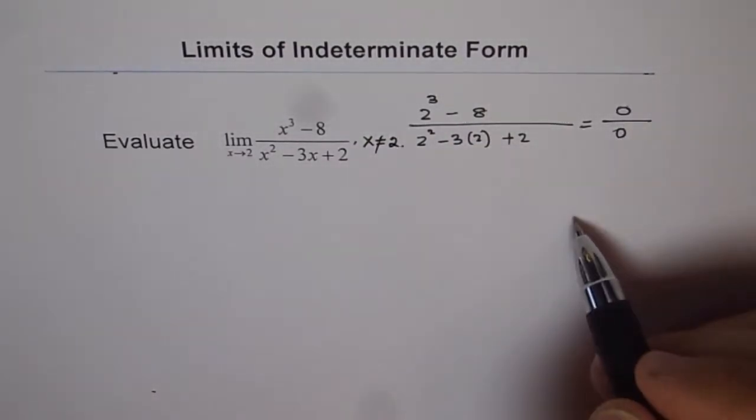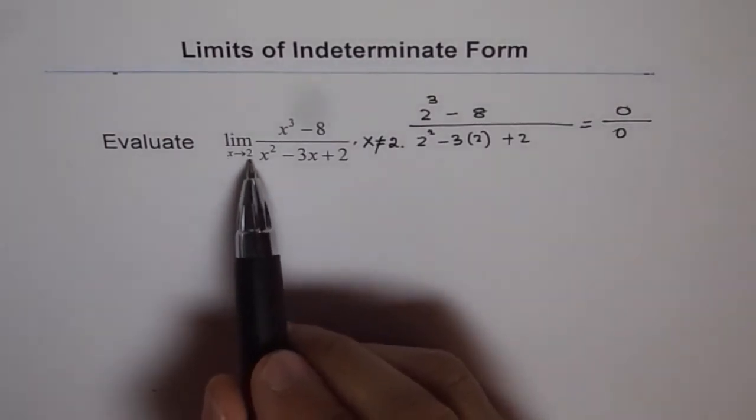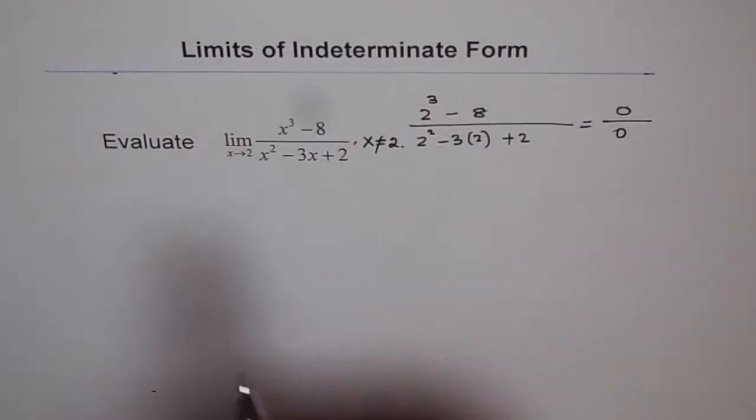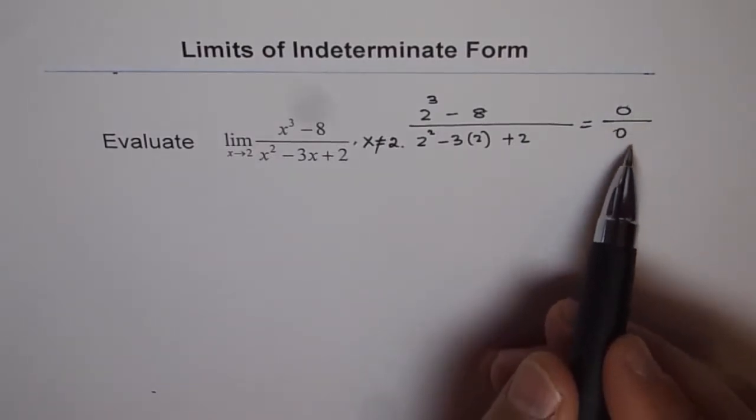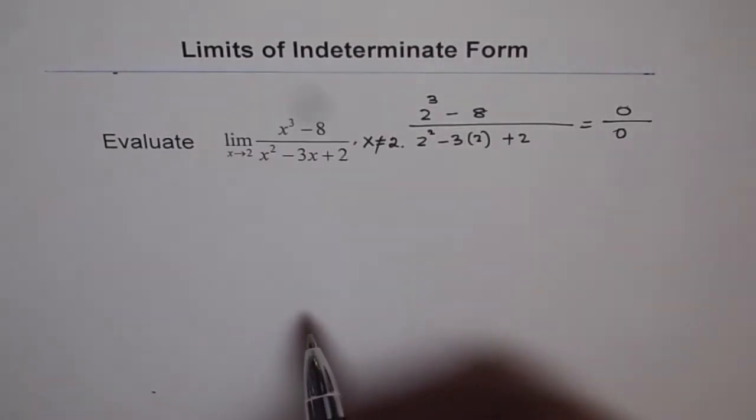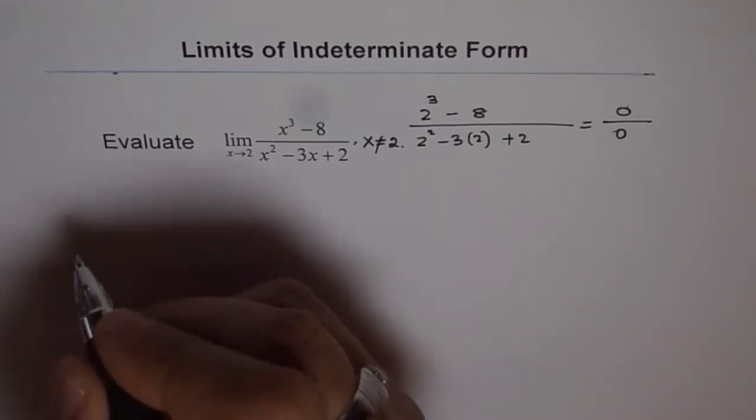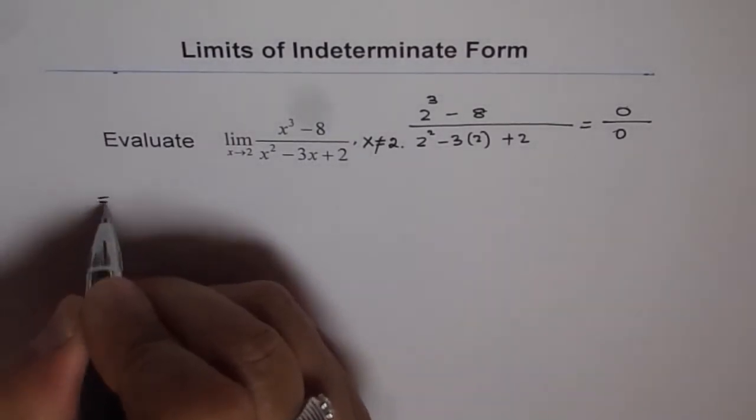Now 0 over 0 indicates that x minus 2 is a factor of the numerator because we got 0 there, and x minus 2 should be a factor of the denominator also. We will simplify using factoring to isolate those factors and then simplify and get the limiting value. So that is the strategy. Let's start working on it.